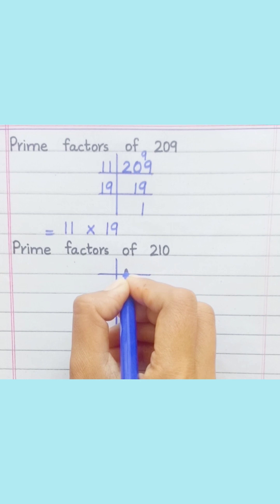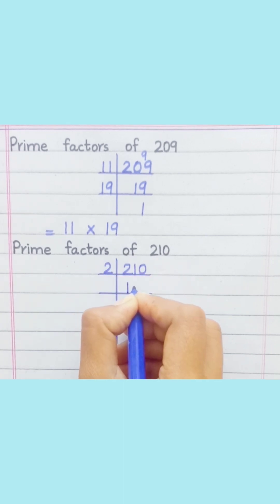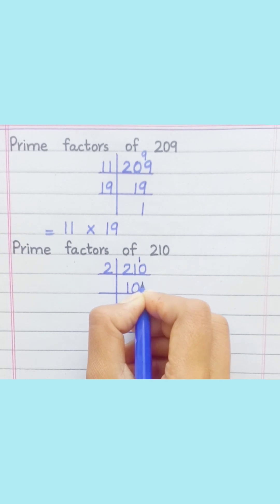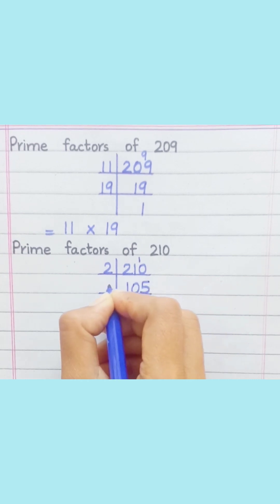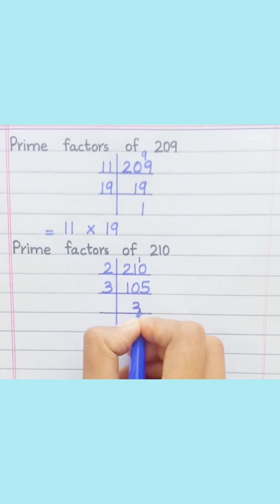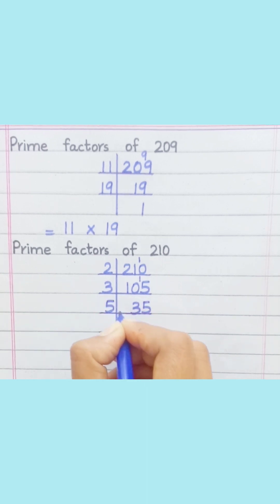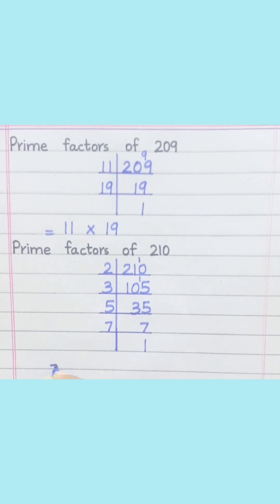Prime factors of 210. 2 ones are 2, 2 zeros are 0, 2 fives are 10, 3 threes are 9, 3 fives are 15, 5 sevens are 35, 7 ones are 7. Equal 2 multiply 3 multiply 5 multiply 7.